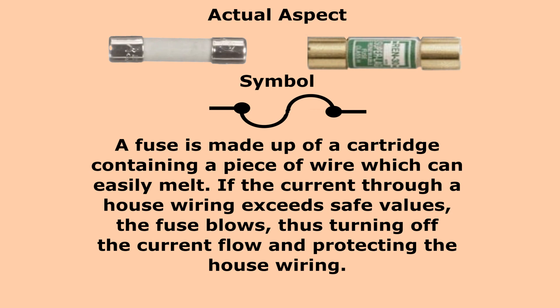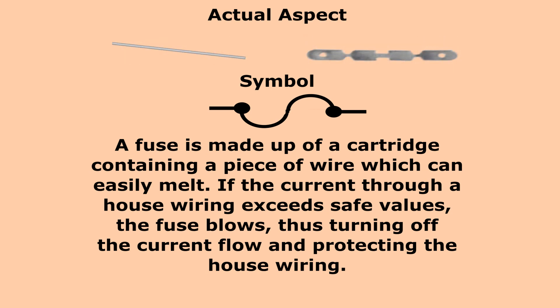Inside a cartridge, there is a low melting point conductor, through which the electrical current flows to the various appliances in the house.